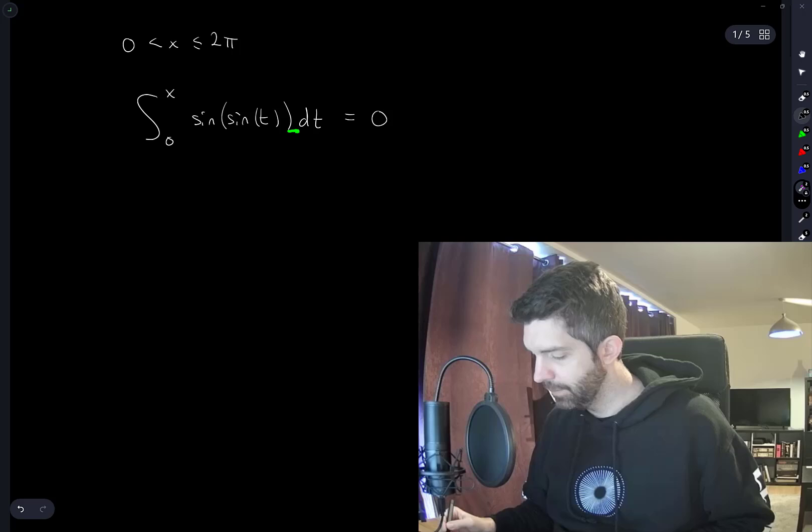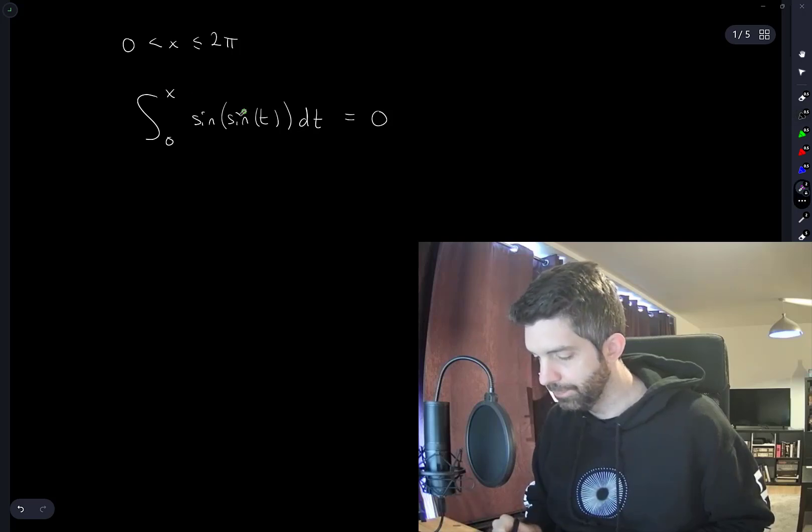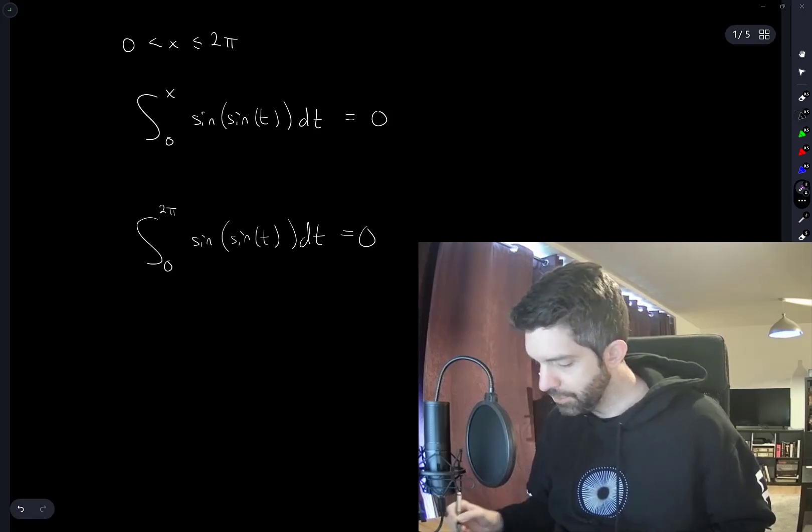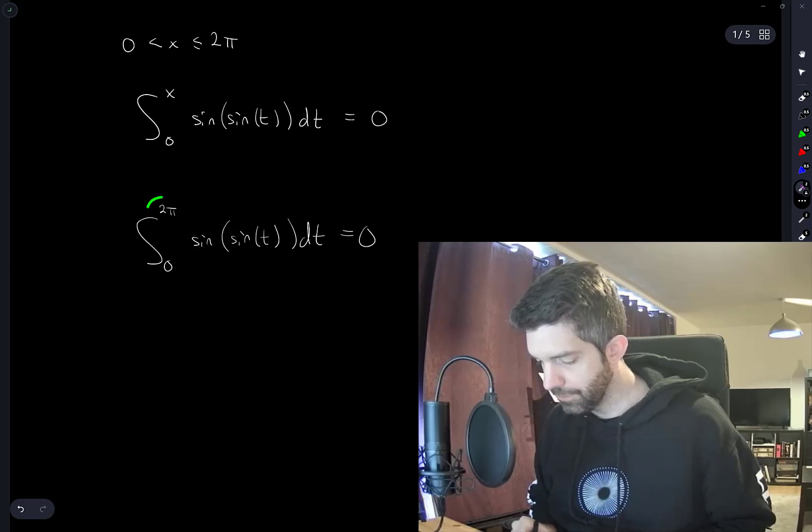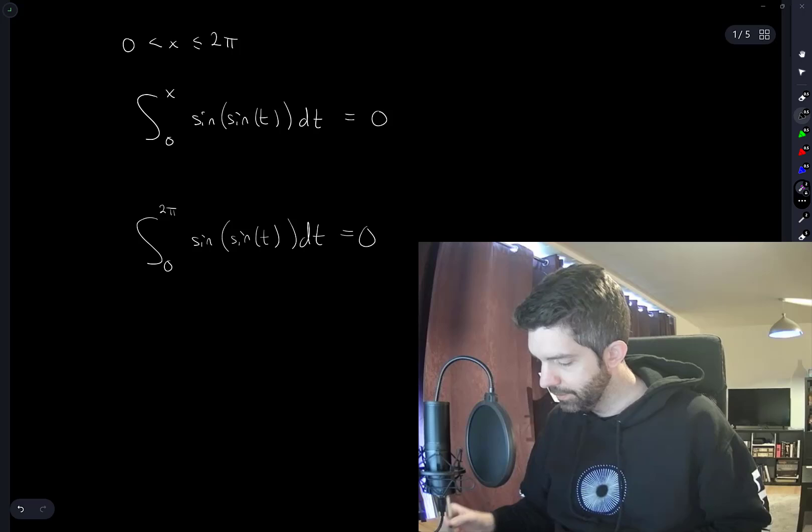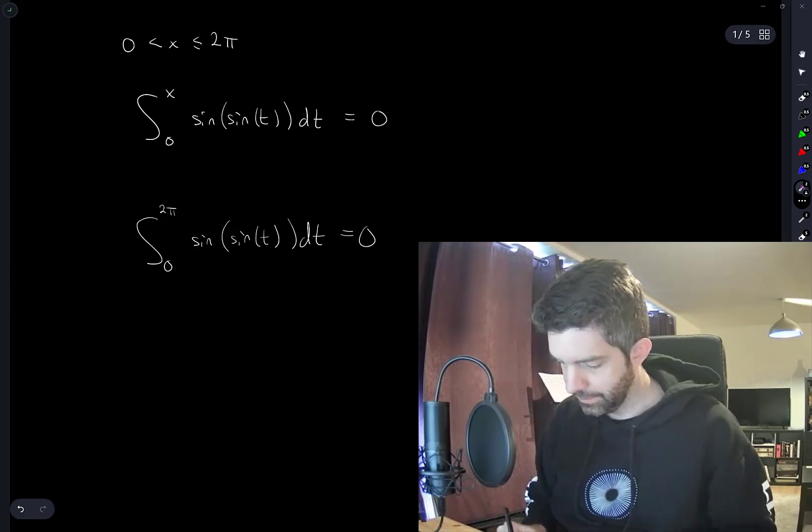And so the only time that this will hit 0 again, this whole integral, is when x is equal to 2 pi. So this will be true but it won't be true for any smaller value here because, you know, what if I write it like this?